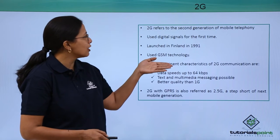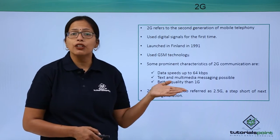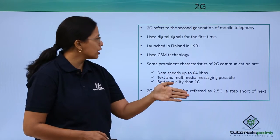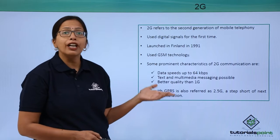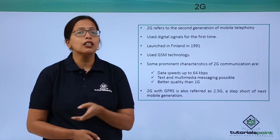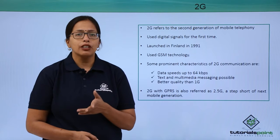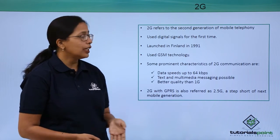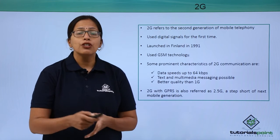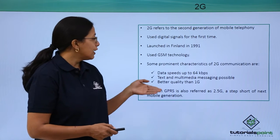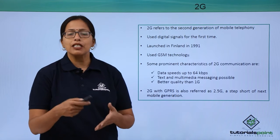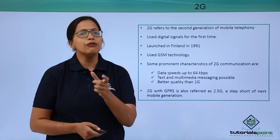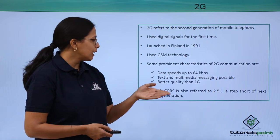The second generation used digital signals for the first time — a shift from analog to digital. It was launched in Finland in 1991 and used the GSM protocol for the first time. Data speeds moved up to 64 kbps, and text and multimedia messaging became available. In 1G we had only voice, but now we had text and multimedia messages.